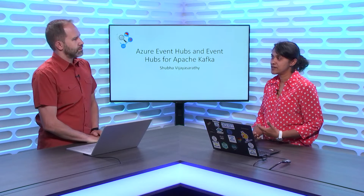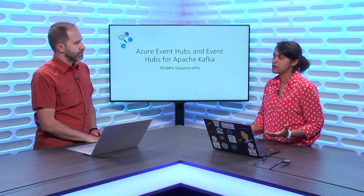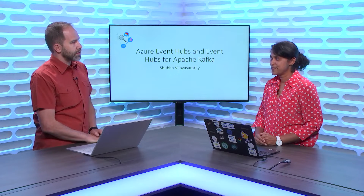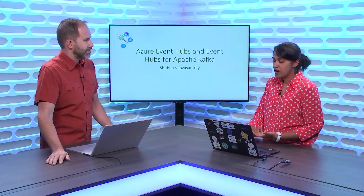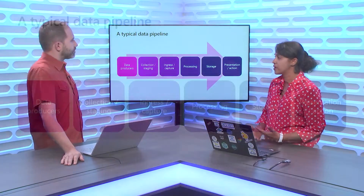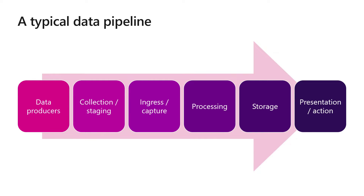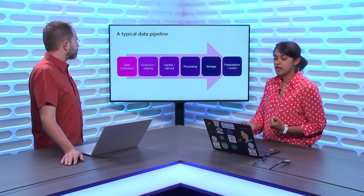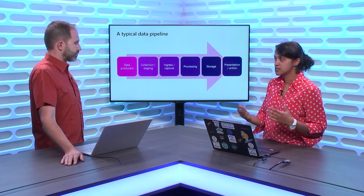Event Hubs is a distributed streaming platform, and Apache Kafka is also a distributed streaming platform. We on the Event Hubs team try to bring these two big data streaming platforms together. In any enterprise, you would be building a data pipeline — you have producers or data points you're interested in, you start collecting, staging, ingressing, processing, modeling, and viewing. That's the whole typical data pipeline.